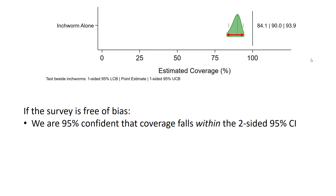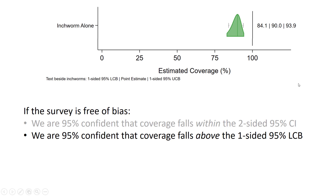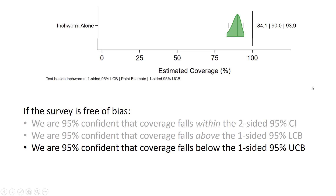Here's an inchworm plot, and we're just going to review the three statements that we sometimes make about 95% confidence. We are 95% confident that coverage falls somewhere within the two-sided confidence interval. We are also 95% confident that coverage falls somewhere above the one-sided lower bound.